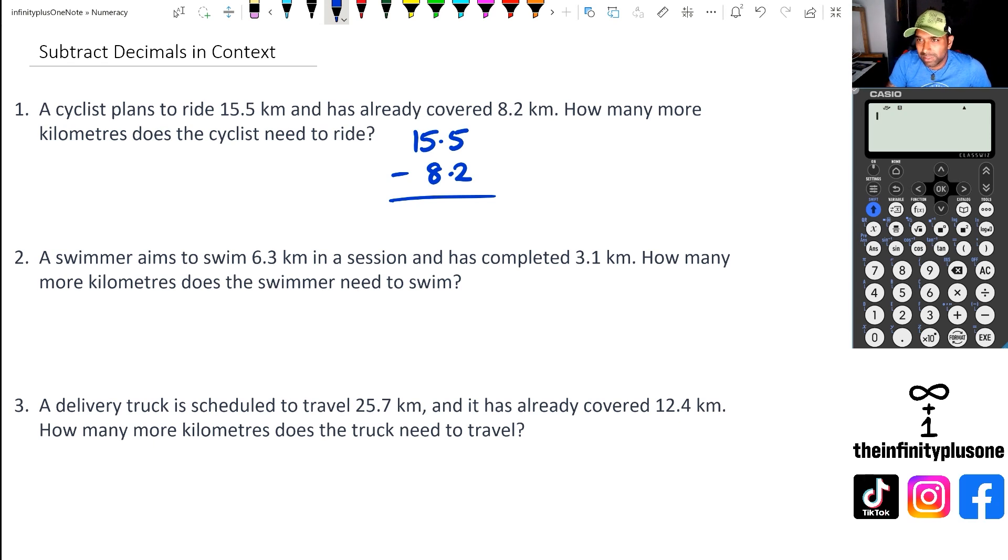So I've got 5 take away 2, which happens to be 3. 15 take away 8, that's going to be 7.3. So we've got 7.3 kilometers the cyclist needs to ride. As for the calculator, let's just check it out. 15.5 take away 8.2, that's 7.3.